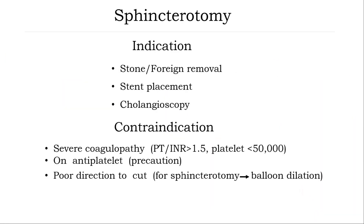Indications for sphincterotomy include stone removal, foreign body removal, stent placement, and insertion of a cholangioscope for cholangioscopy. Some conditions need to be addressed — coagulopathy needs to be corrected. Patients on antiplatelet agents need to be properly prepared before the procedure. In cases of poor direction for cutting, it is recommended to change from sphincterotomy to balloon dilation.